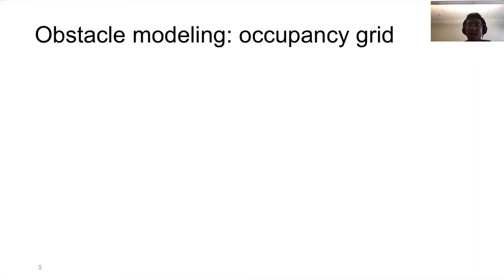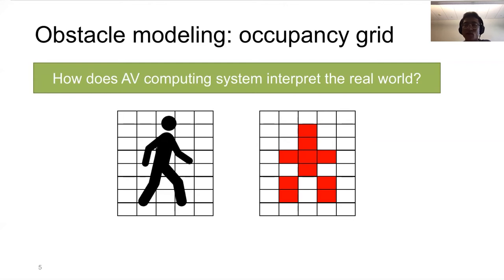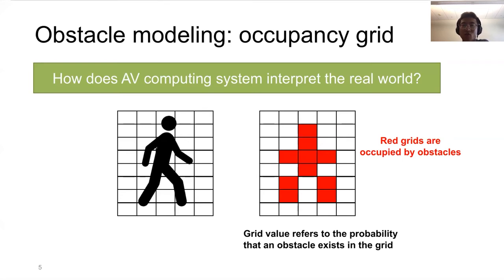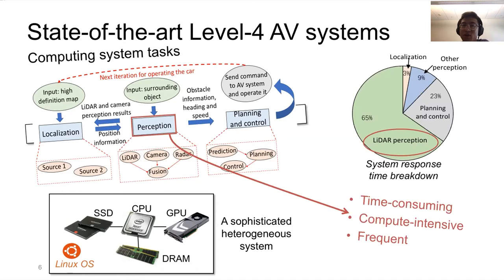In this work we want to optimize LiDAR perception latency. Before that, I want to introduce how the AV interprets the real world. A general technique is the occupancy grid: we divide the real world into multiple smaller 3D grids, and if a grid is occupied by an obstacle it is marked — for example, red grids indicate occupied cells the car should not drive into. Each grid cell has two variables: the value, referring to the probability that an obstacle exists in that grid, and the coordinate.